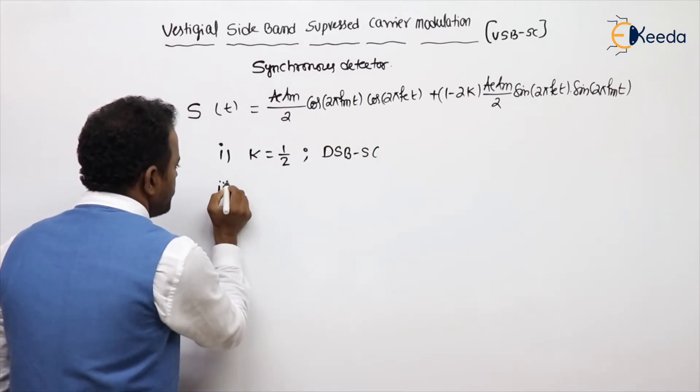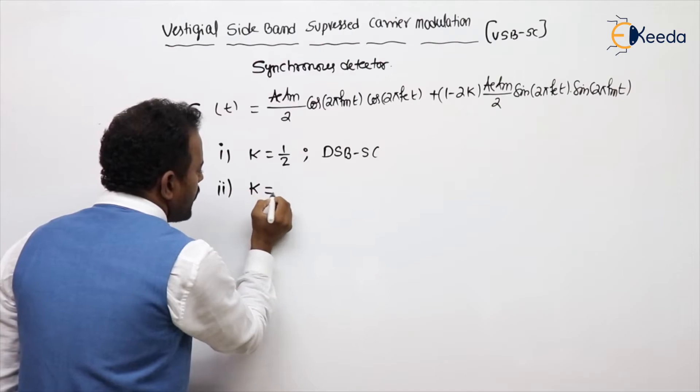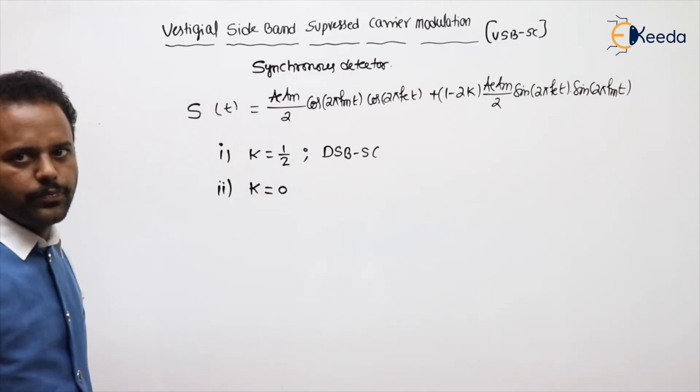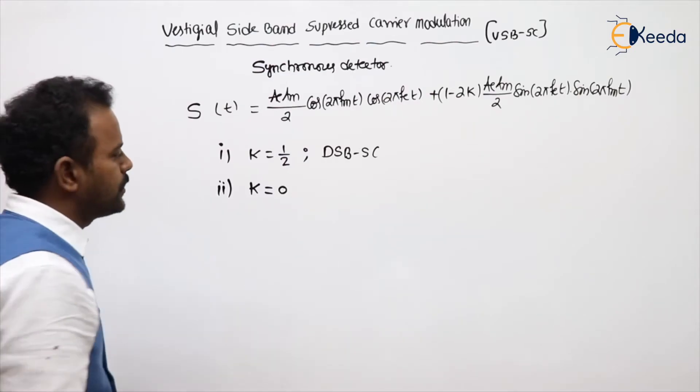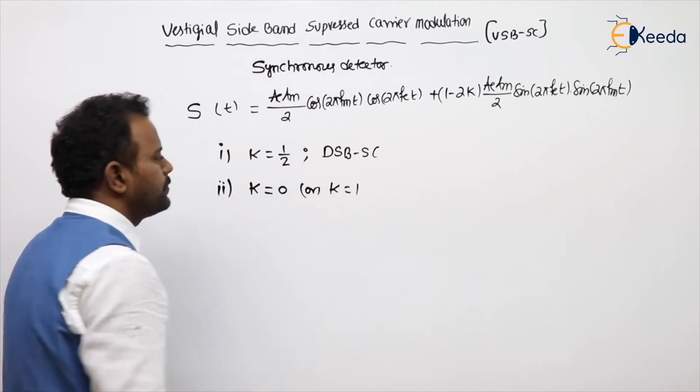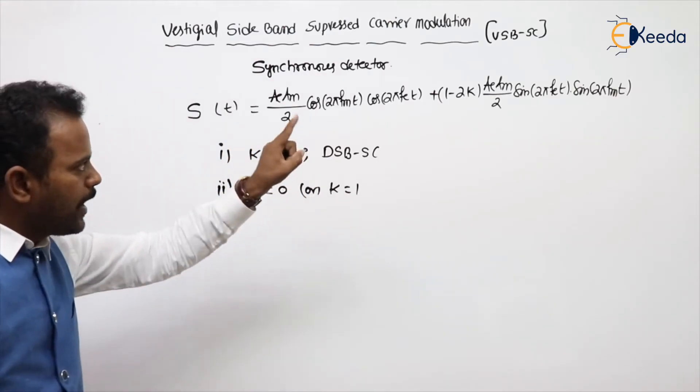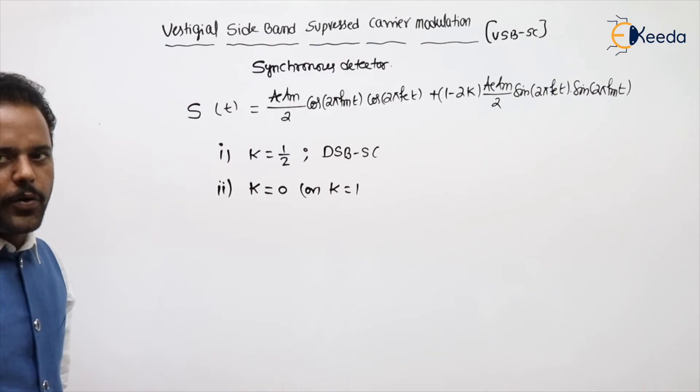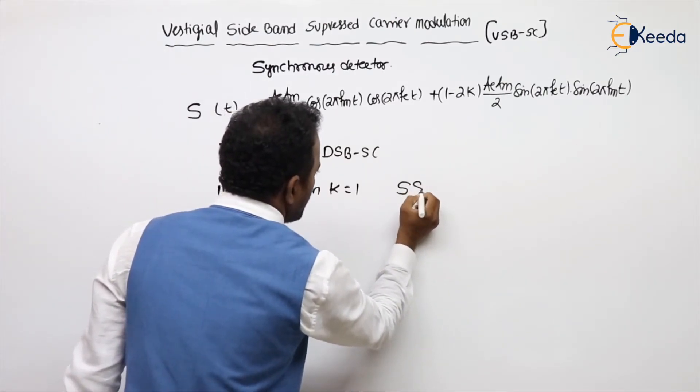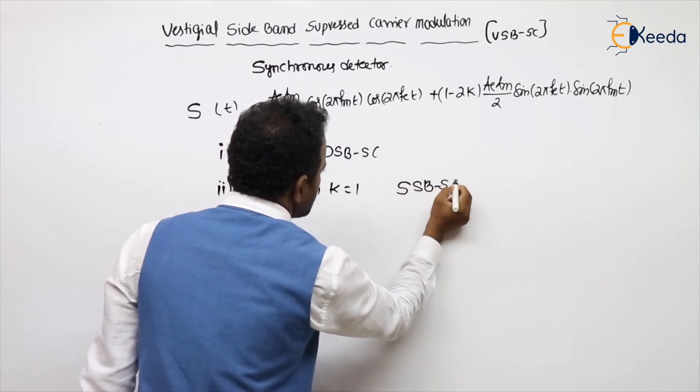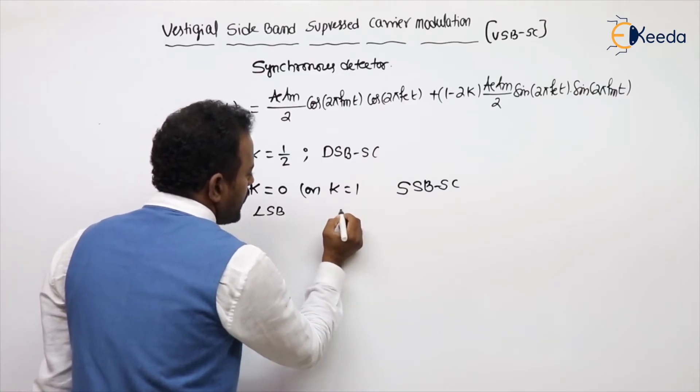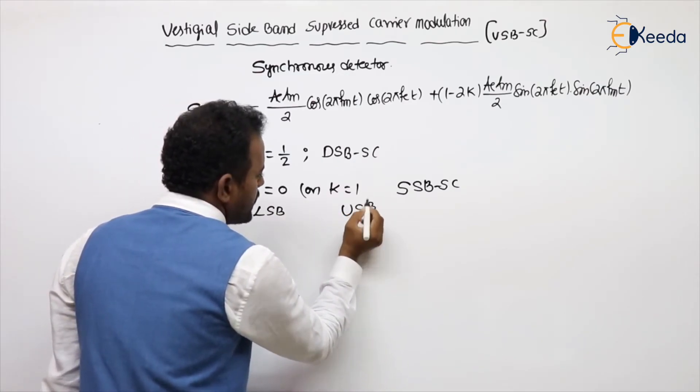Second case. Suppose if k value is 0 or k value is 1. Now you can observe which modulation scheme is coming? It will be SSBSC modulation scheme. If k equal to 0, LSB; if k equal to 1, upper sideband.